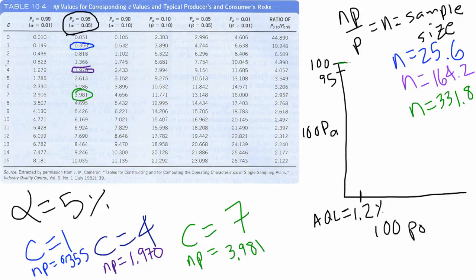So we get 26 samples for the first case where our C is 1. And then when our acceptance number is 4, we get 164 samples required. And then in the last case, when our acceptance number is 7, we require 331 samples.